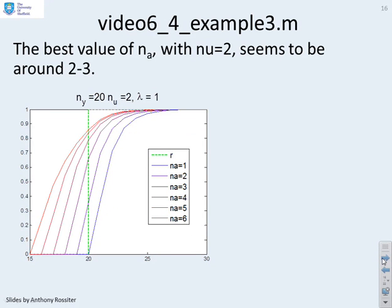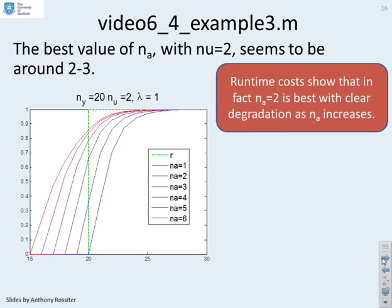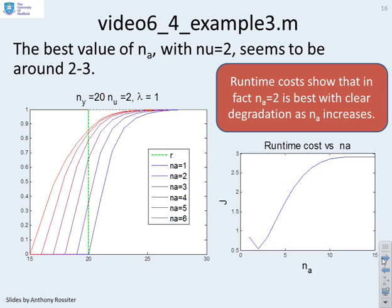Example 3. Different dynamics. And here I've got Nu equals 2, and the best value for NA is now 2. This is fairly clear. You'll see there's a very clear minimum on the cost curve as you change J. So some curves, it's fairly clear. You say, yep, this is the best NA and that's the end of it. And other curves, it's not quite so clear. Unlike in examples 1 and 2, it's not advantageous for NA to be bigger than Nu. In fact, it's a disadvantage.